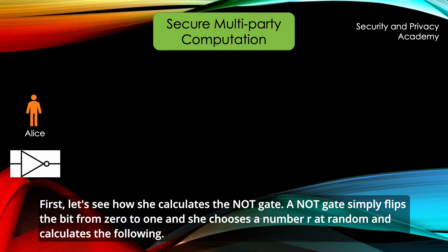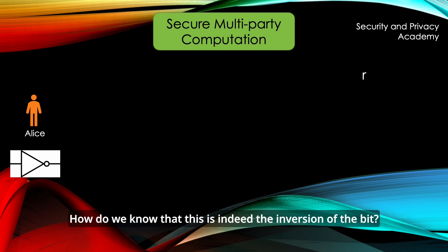A NOT gate simply flips the bits from 0 to 1 and she chooses a number R at random and calculates the following. How do we know that this is indeed the inversion of the bit?